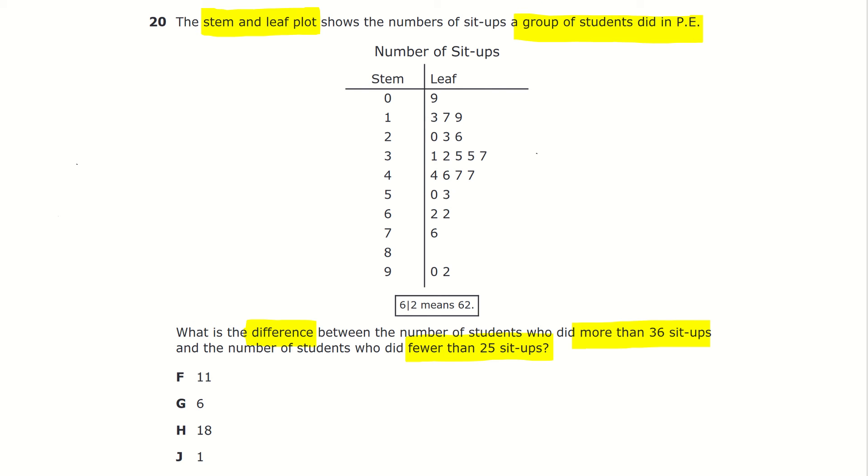Before we start to solve this equation, we first need to understand what is a stem and leaf plot. A stem and leaf plot is a way to organize data. The method of organizing data in a stem and leaf plot is basically finding a common number between multiple numbers in a set of data.